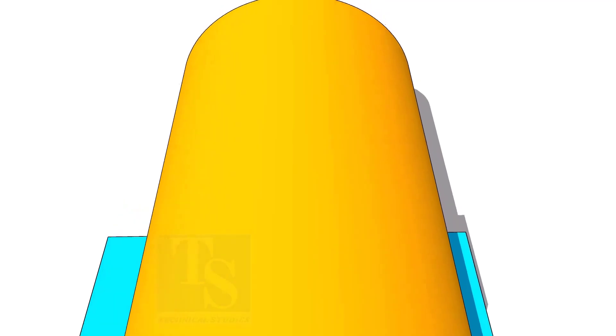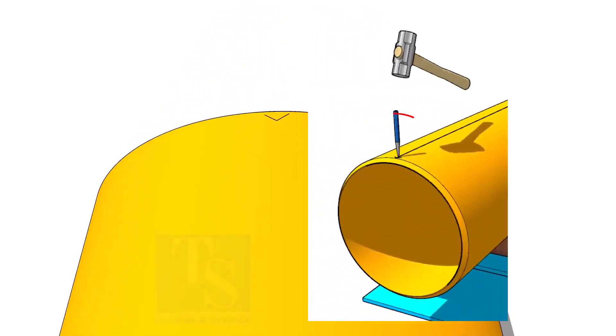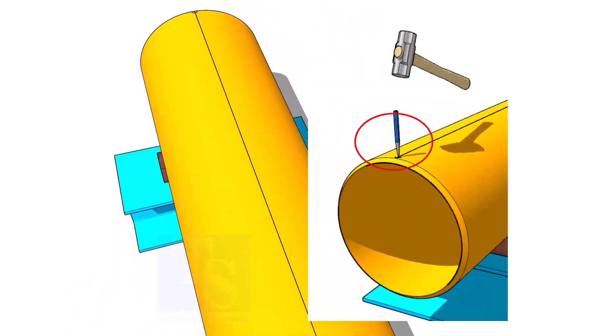Mark the center of the other end of the pipe and draw a line. If required, punch mark the line ends.